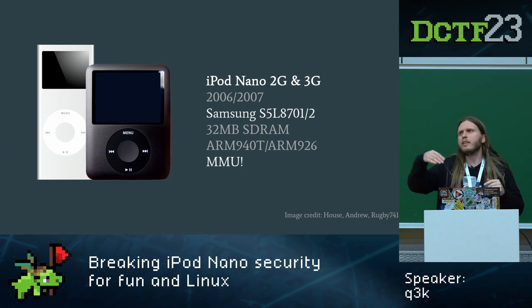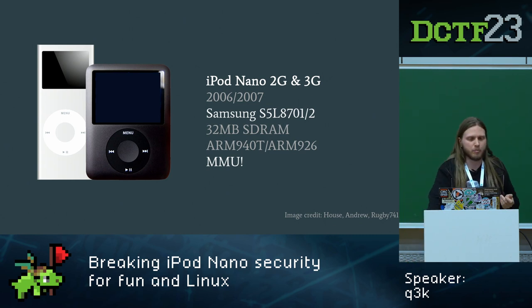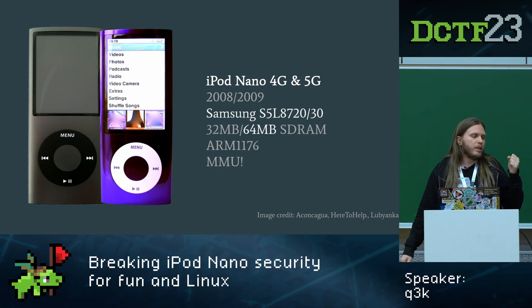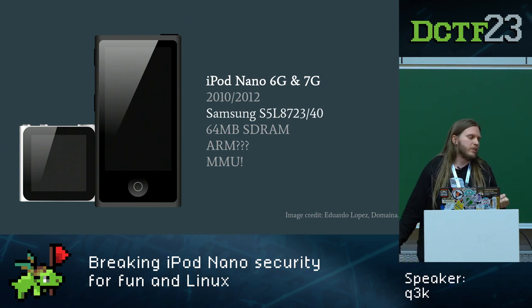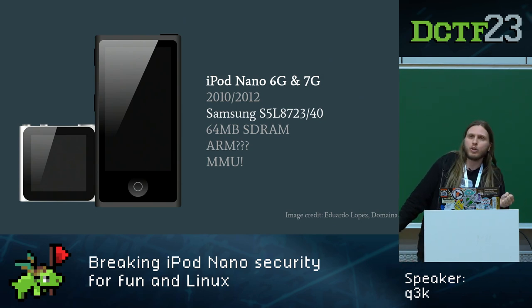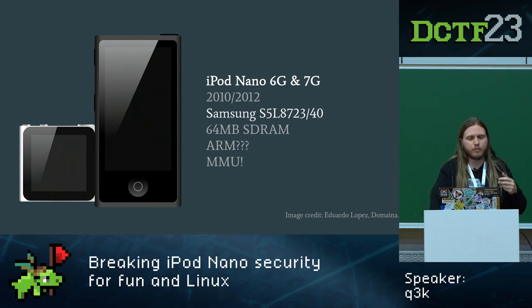As Apple made more iPods with newer versions of this SoC, they kept adding more custom peripherals while Samsung was basically just manufacturing them. Afterwards came two more Nanos with higher SoC numbers, now featuring an ARM11 core. The fifth generation has 64 megs of RAM, which is starting to be serious. The final two Nanos — sixth and seventh gen — both have touch screens. The sixth gen is also known as 'I cannot believe this is not an Apple Watch,' and the seventh gen as 'I cannot believe this doesn't run iOS.' But it's not iOS — it's the same old software made to look like iOS. We don't have code execution on those yet. The latest chip is the Samsung S5L8740.